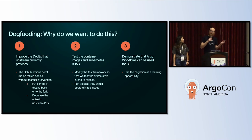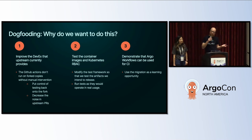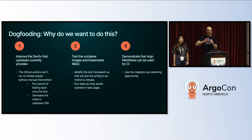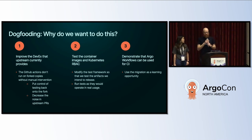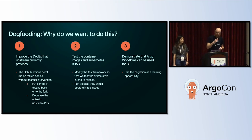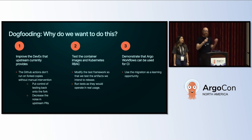Secondly, the CI that's up there at the moment doesn't run as you might expect. It builds container images and then doesn't use them for the end-to-end tests — it just puts them to the side and runs binaries instead. And lastly, we at PipeKit know that Argo workflows is great for CI. We use it internally and have customers that use it for CI. It feels fitting that we should prove that workflows can run CI for itself.